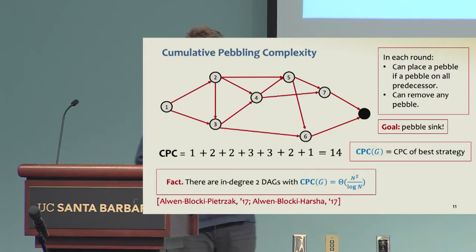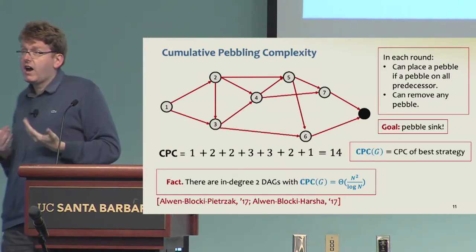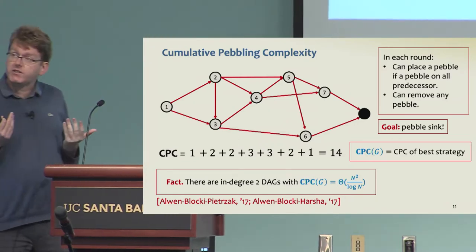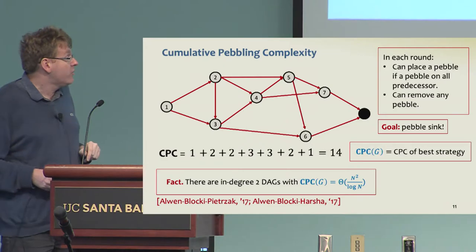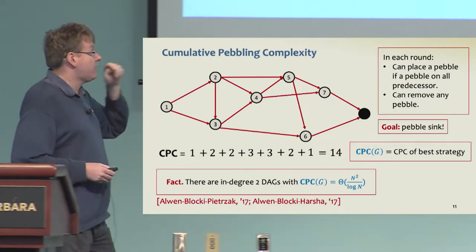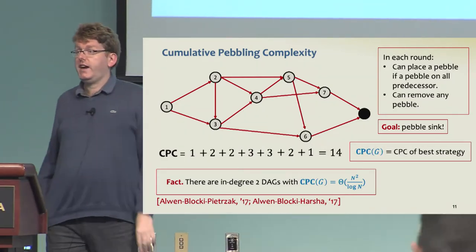The pebbling complexity of the graph is just the pebbling complexity of the best strategy, the lowest one. We know by prior works that we can give graphs or family of graphs with constant degree or even degree 2, which have optimal CPC, cumulative pebbling complexity, of n squared over log n.